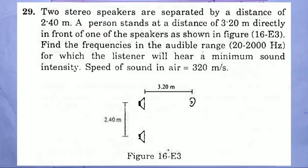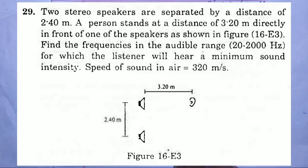SC Buma solution, chapter 16, sound wave, question number 29. Two stereo speakers are separated by a distance of 2.4 meters. A person stands at a distance of 3.2 meters directly in front of one of the speakers, S1. Find the frequency in the audible range 20 to 20,000 Hz for which the listener will hear minimum sound intensity. Speed of sound in air is 320 meters per second.